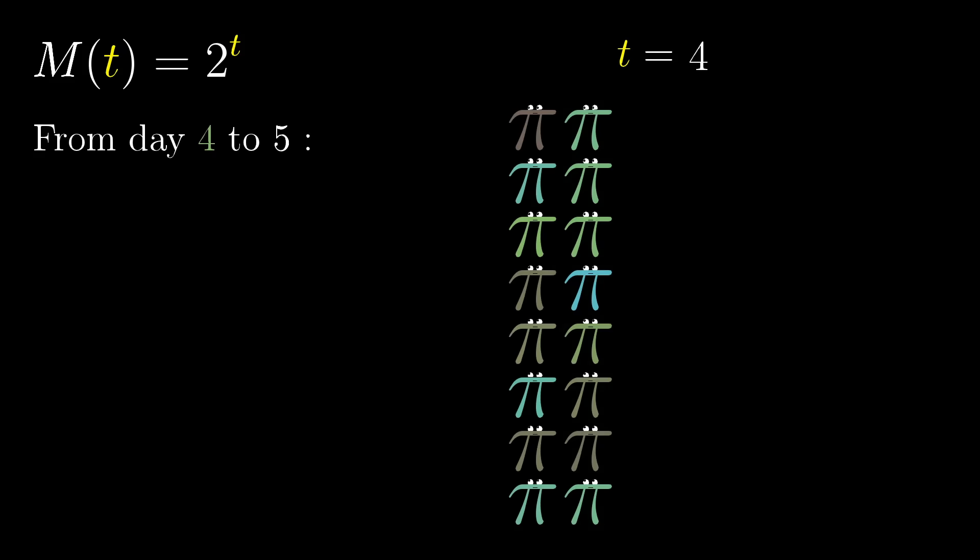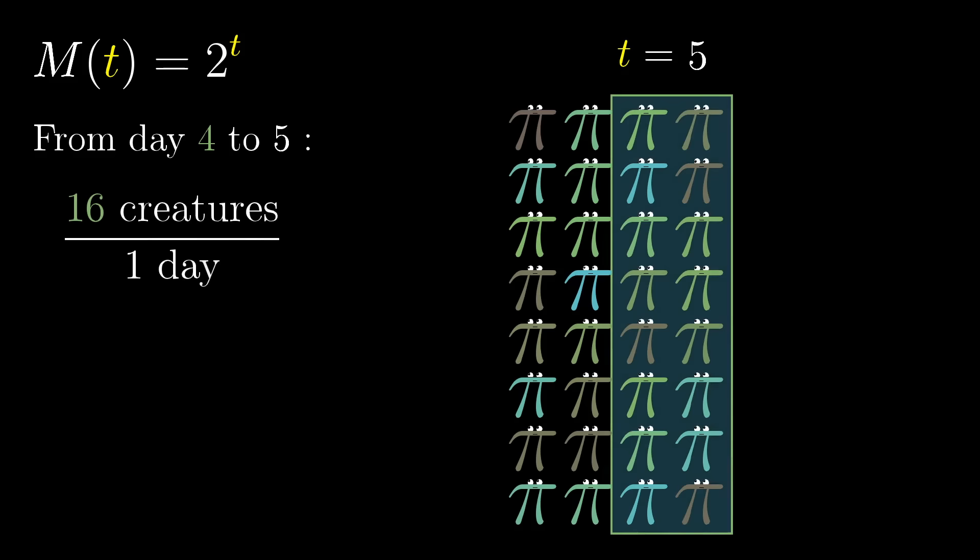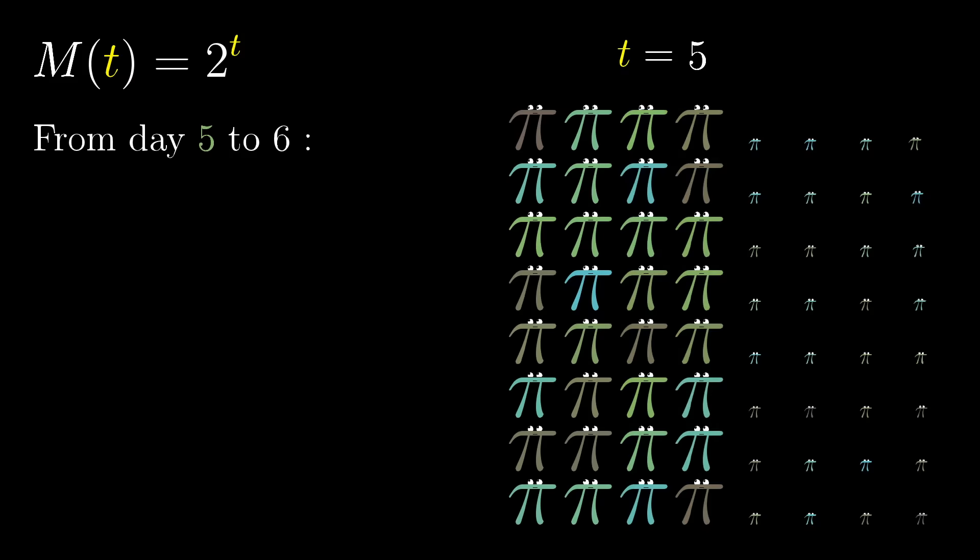And notice, that rate of growth equals the population size at the start of the day. Between day 4 and day 5, it grows from 16 to 32, so that's a rate of 16 new creature masses per day, which again equals the population size at the start of the day. And in general, this rate of growth over a full day equals the population size at the start of that day.